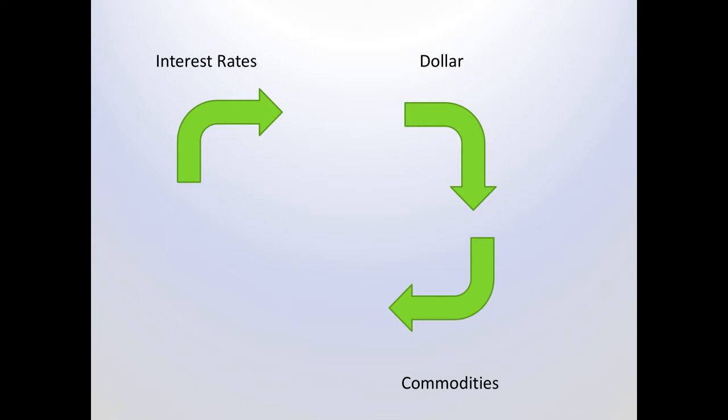By commodities, we mean two big commodities — gold and oil — but it also affects copper and zinc and grains and anything else out there. Commodity prices have an impact on markets as well, not so much necessarily in the stock market, but they do in a creepy underhanded way.